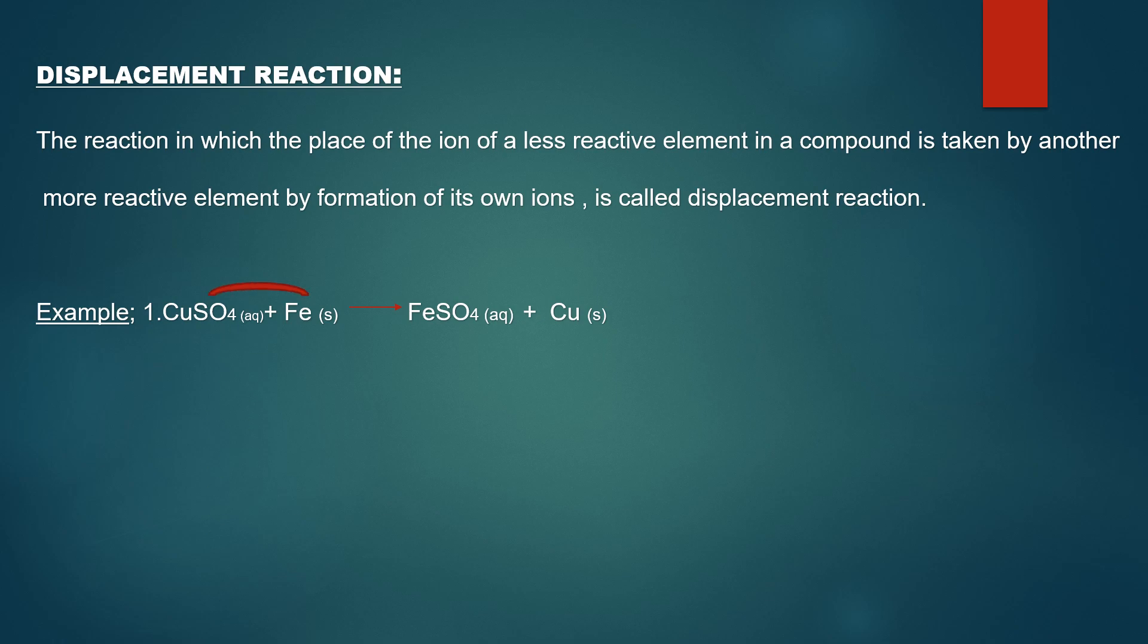Now here you can see that copper is displaced by more reactive element, that is ferrous. That is why the product is ferrous sulphate and copper is given. Next is the same example. You can see that zinc displaces copper from the reaction and the product formed is zinc sulphate and copper.